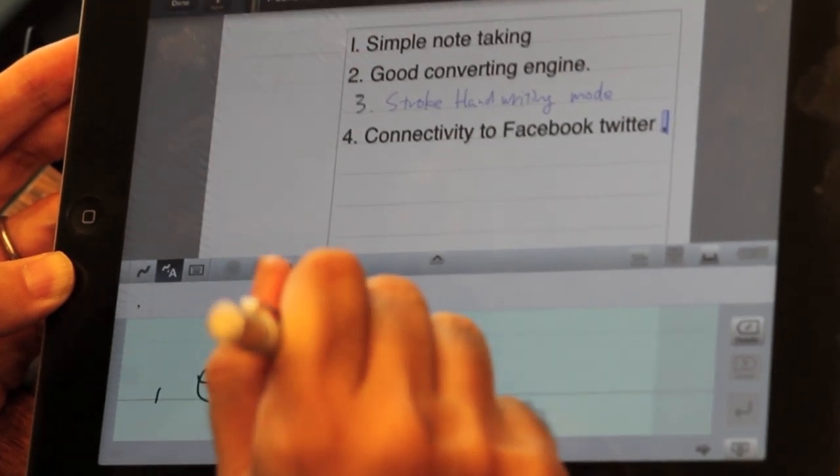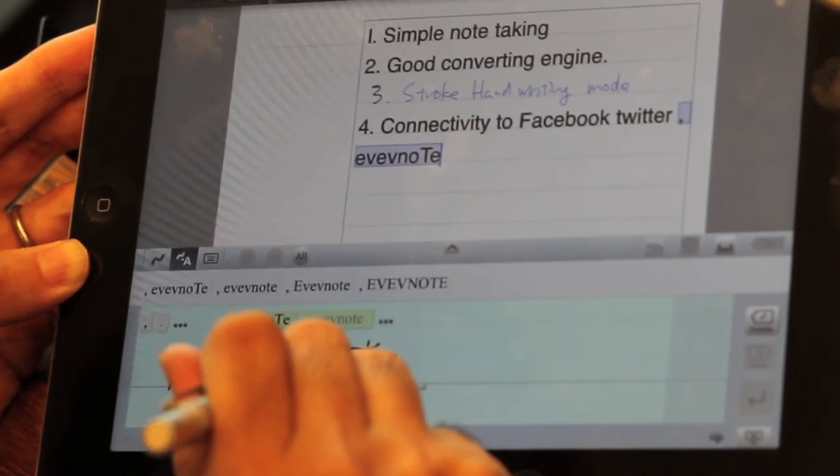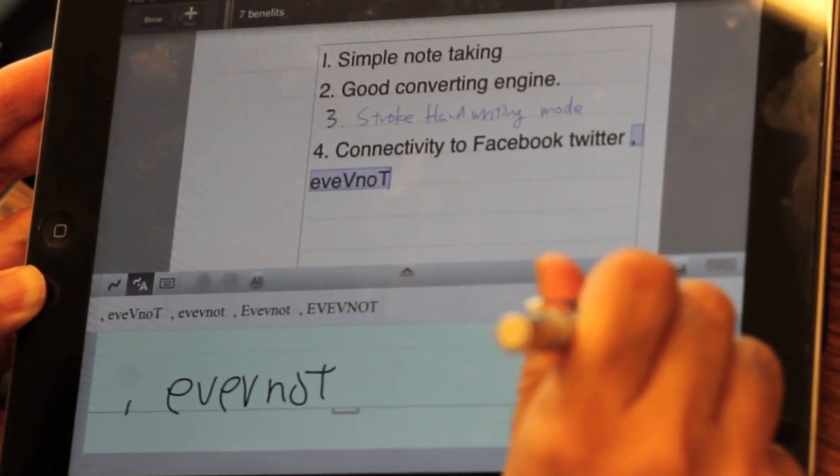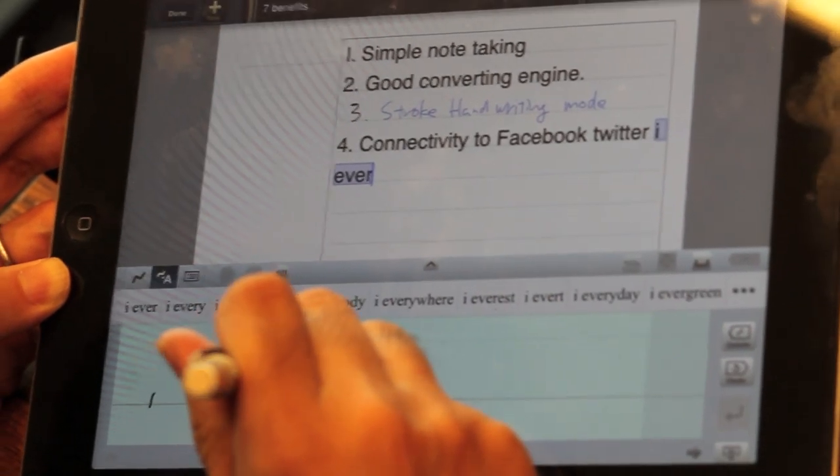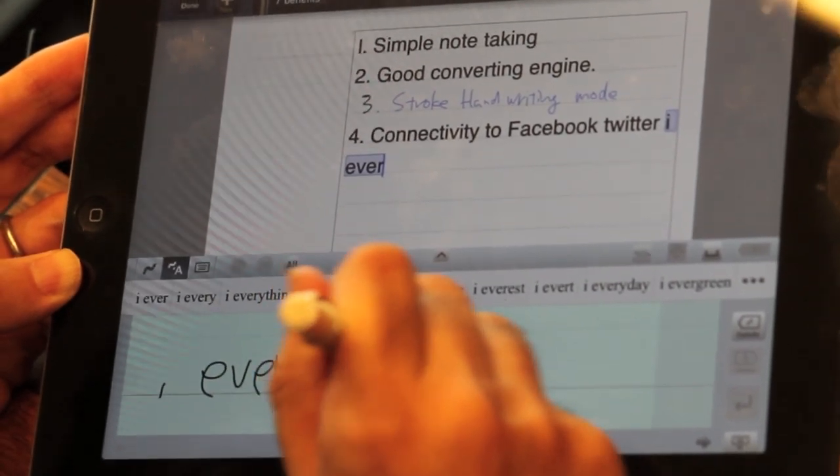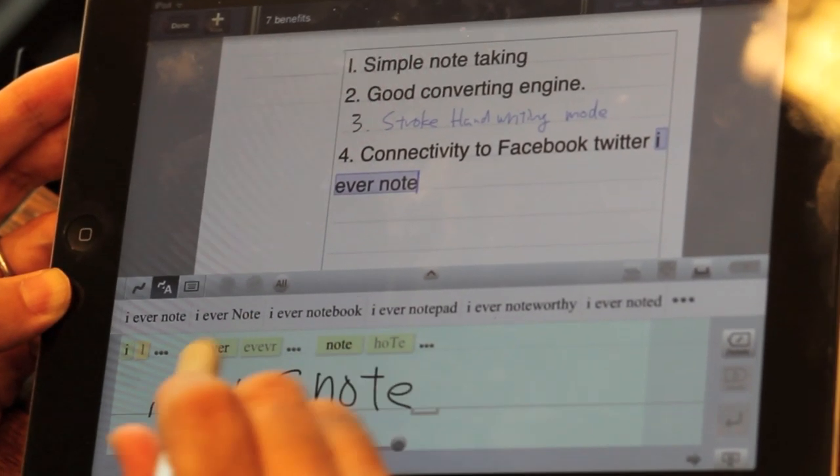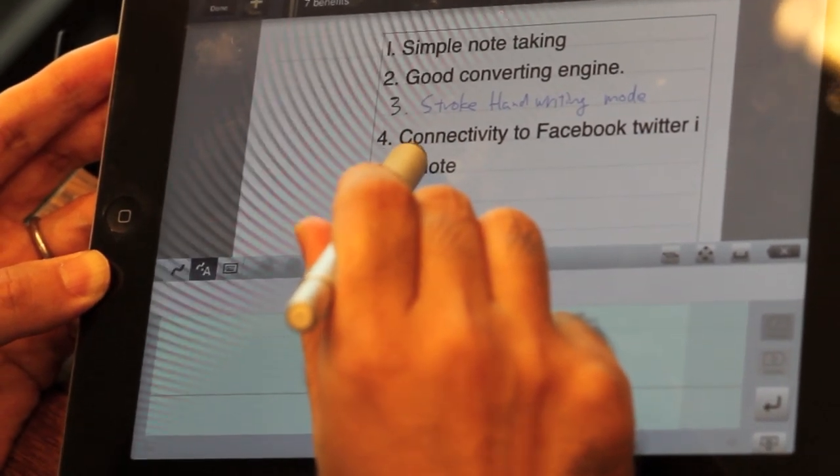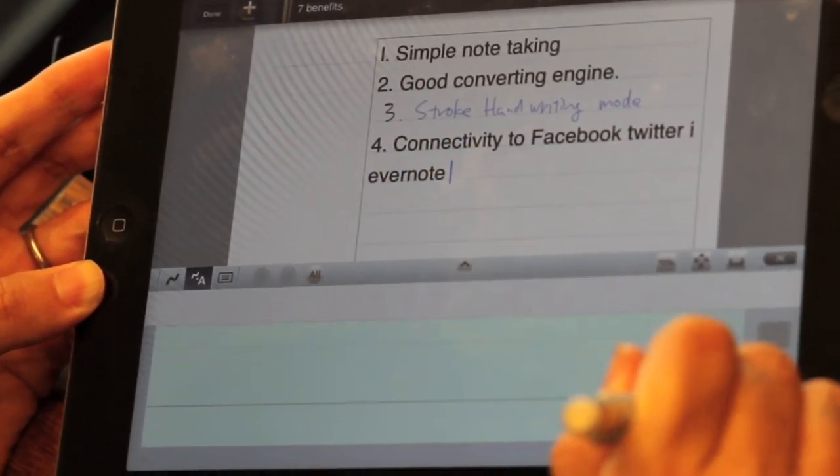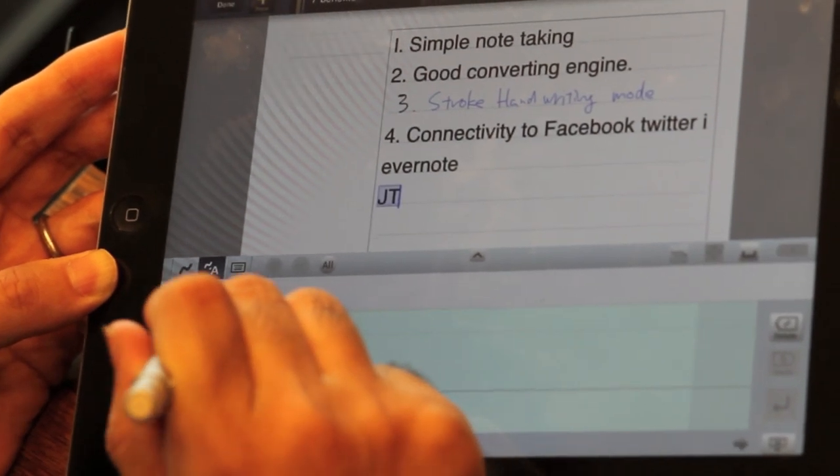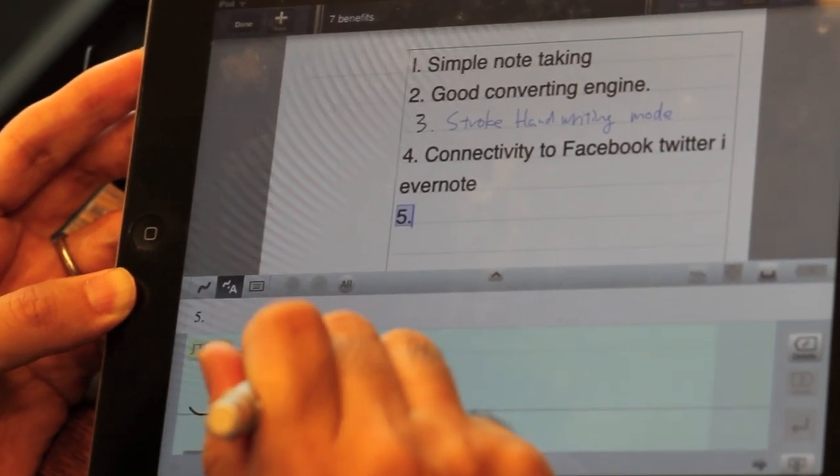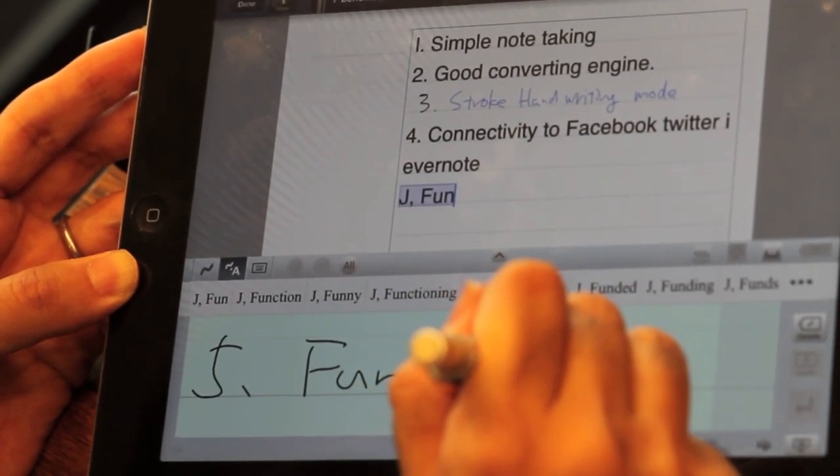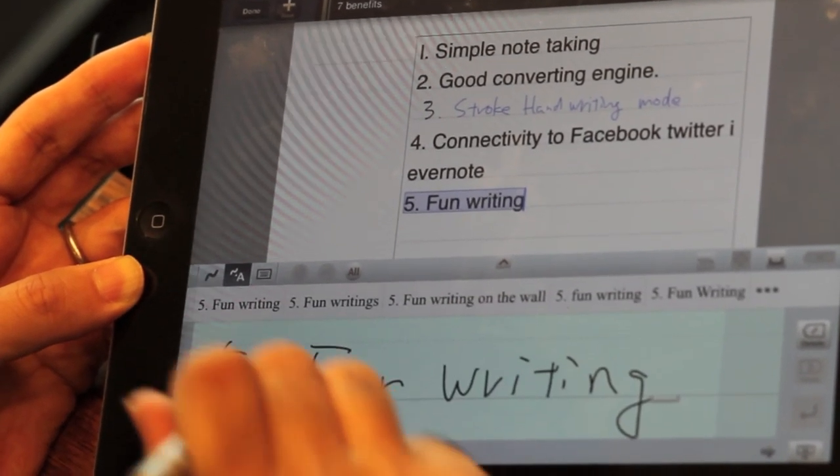Your notes, when you save them, you can actually send them to services like Facebook and Twitter. You can also store them in services like Evernote or Dropbox, which is kind of cool. So, I was hoping that there might be some kind of way that it could sync to notational velocity, which is probably my favorite note-taking app. But Dropbox will do.